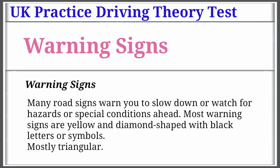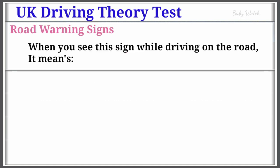Warning Signs: Many road signs warn you to slow down or watch for hazards or special conditions ahead. Most warning signs are yellow and diamond shaped with black letters or symbols. Mostly triangular in the UK.